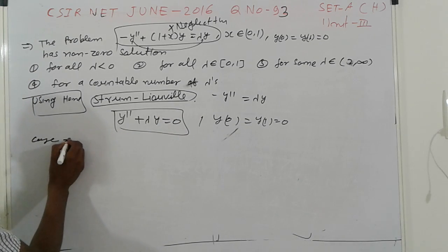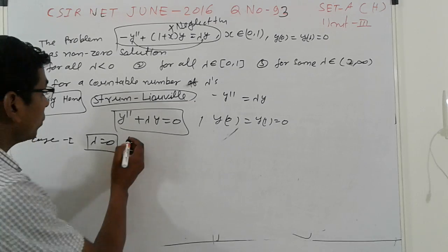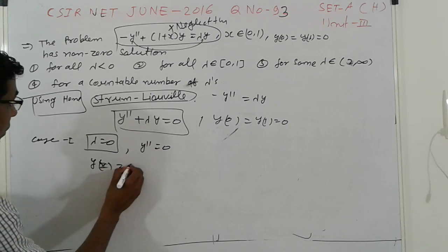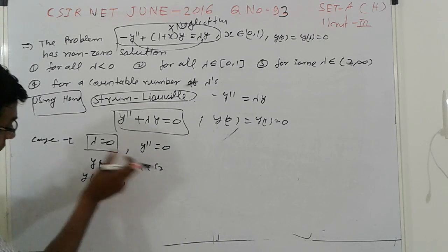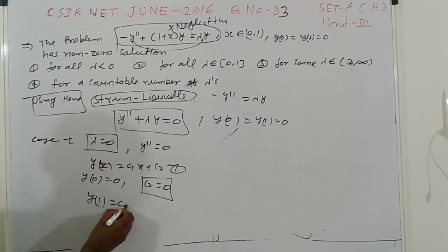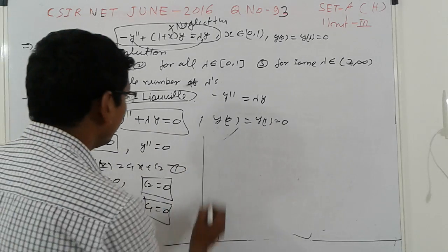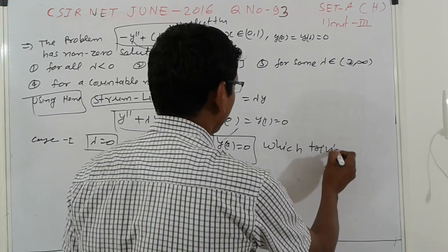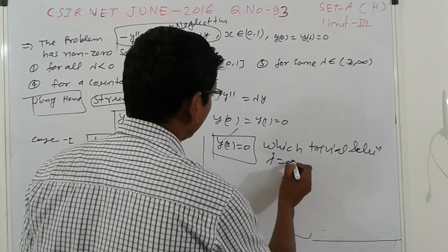Case 1: Suppose λ = 0. Then the equation becomes y'' = 0, which gives y(x) = c₁x + c₂. Applying boundary condition y(0) = 0 gives c₂ = 0. Applying y(1) = 0 then gives c₁ = 0. So y(x) = 0, which is the trivial solution. Therefore λ = 0 is not an eigenvalue.